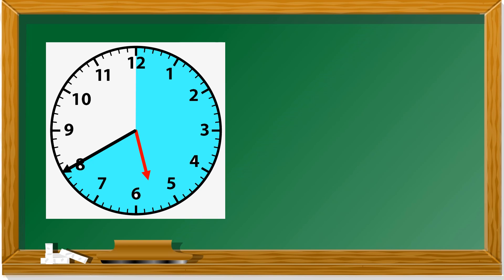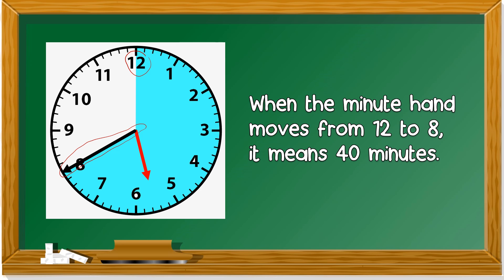Next one. We look from twelve — the minute hand is at eight. When the minute hand moves from twelve to eight, it means 40 minutes. Let's count: twelve to one is five minutes, ten, fifteen, twenty, twenty-five, thirty, thirty-five, forty. Forty minutes.